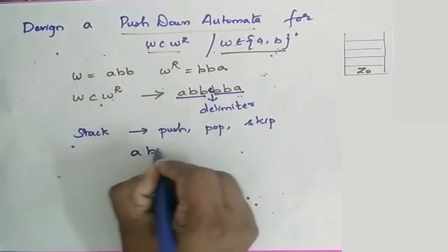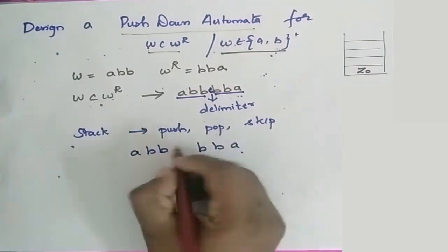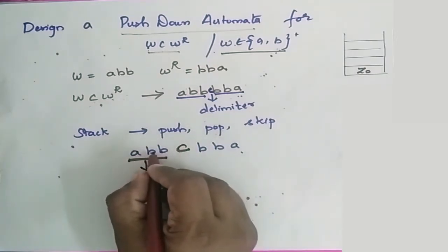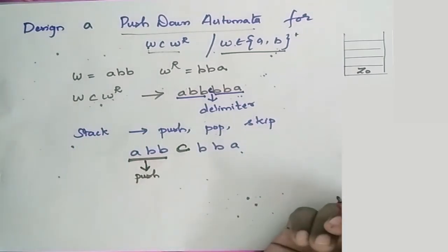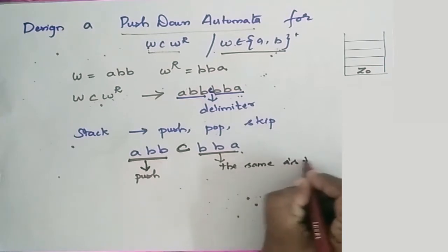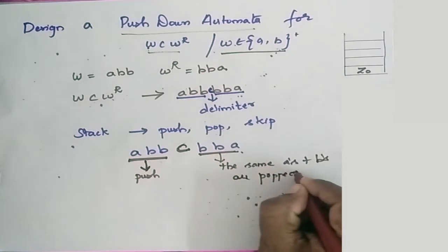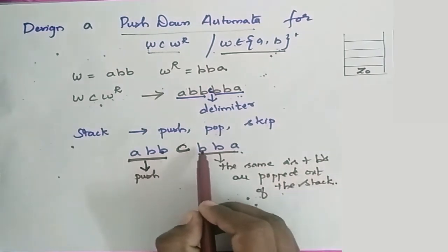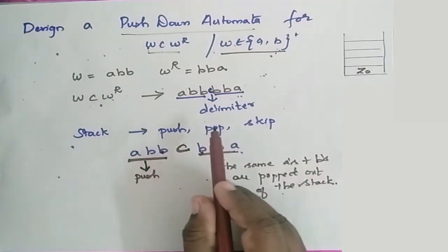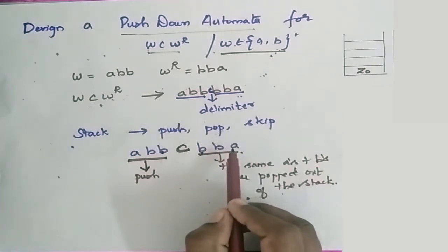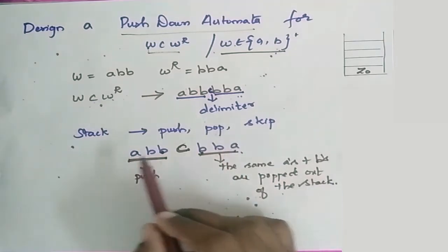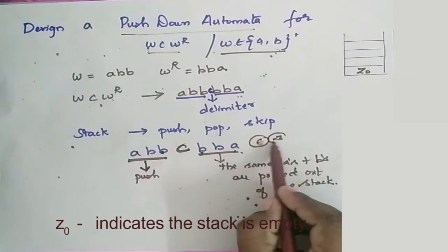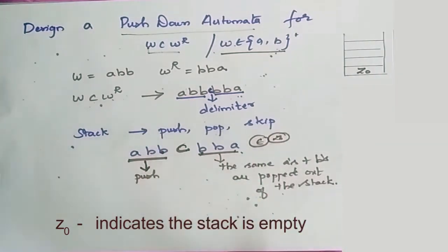Consider the string ABBCBBA, with C as the delimiter. Whatever A's and B's you encounter before the delimiter C are pushed inside the stack. After C, the same A's and B's are popped out of the stack. If you encounter B after C, that same B should be popped. If you encounter A after the delimiter, that A should be popped. At last, when you encounter epsilon, it should find Z-naught in the stack — only then is the string accepted.